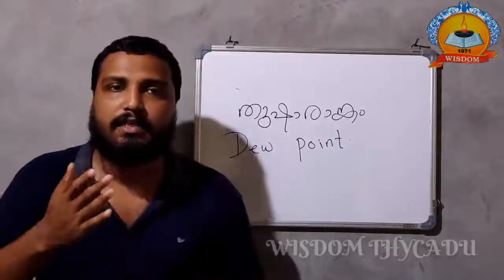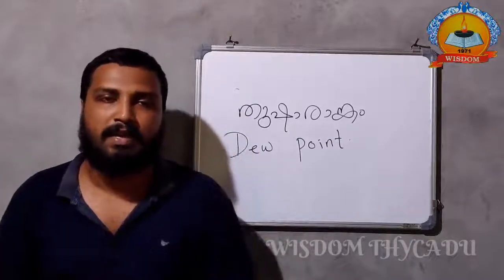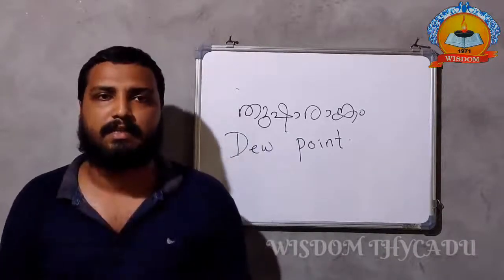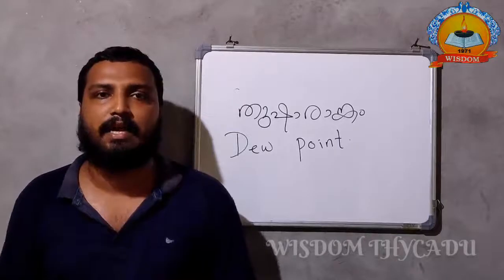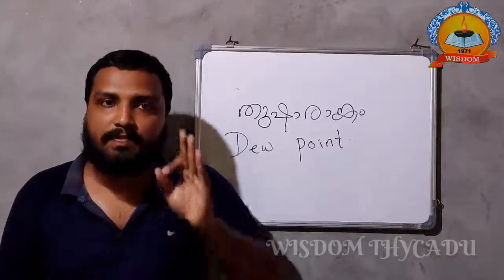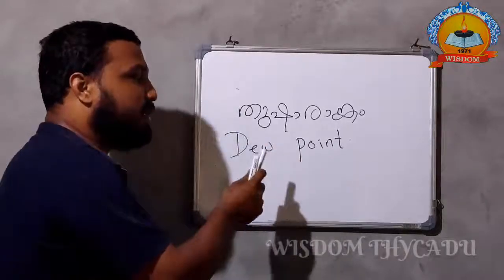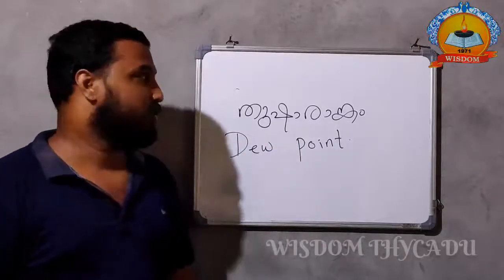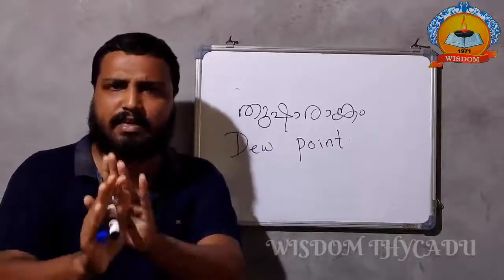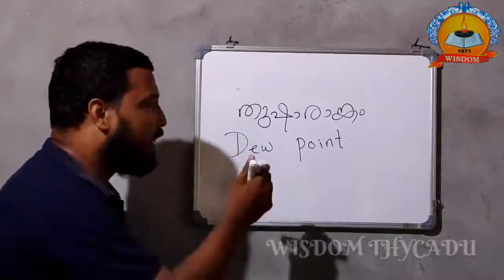Tusharangam is condensation. We call it condensation. The condensation is a critical temperature. The name is Tusharangam. Tusharangam is the dew point. Condensation is a critical temperature.